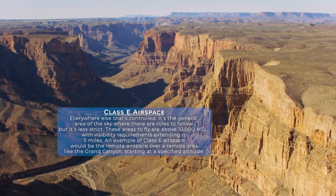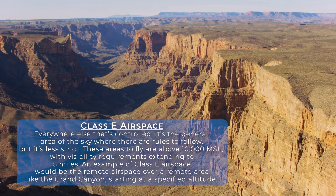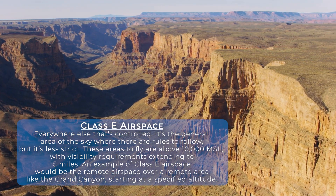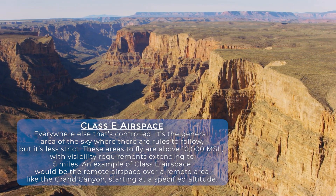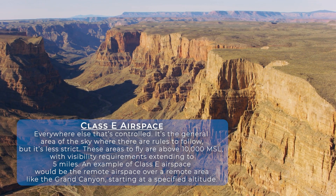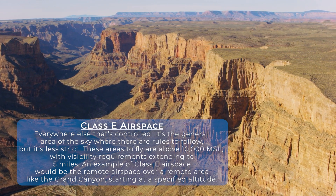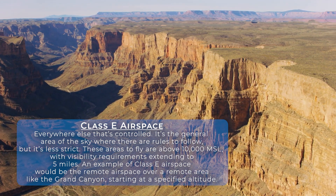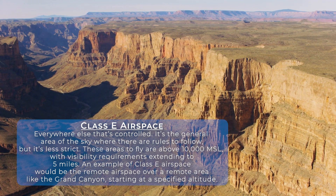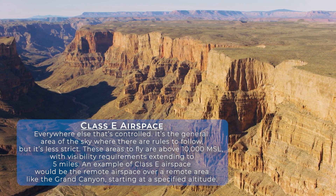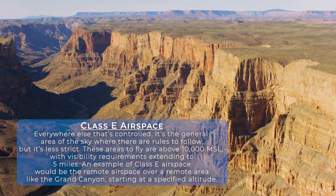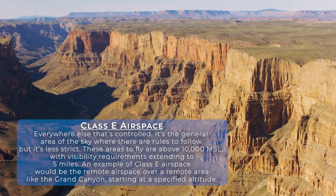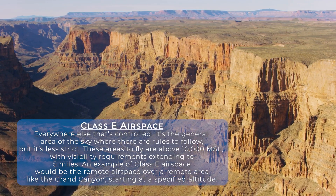Class E airspace is everywhere else that's controlled. It's the general area of the sky with rules to follow but less strict. These areas are above 10,000 feet mean sea level with visibility requirements extending to five miles. An example of Class E airspace would be the airspace above a remote area like the Grand Canyon, starting at a specific altitude.